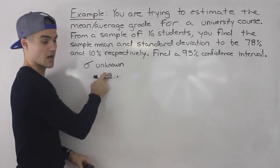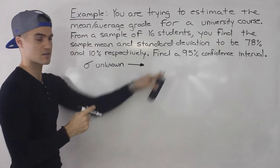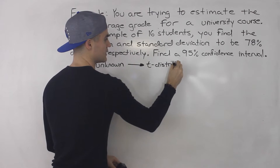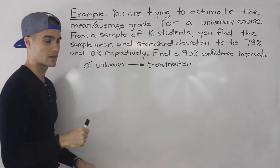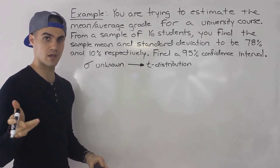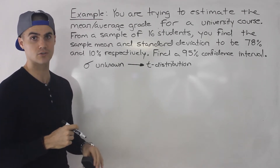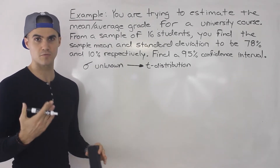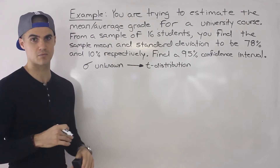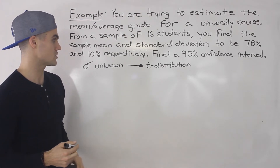Whenever the population standard deviation is unknown, what distribution are we going to use to find this confidence interval? We're going to use the t-distribution. So I'm going to show you how to do it with both the t-table, which you can print out — there's a link in the description box — and I'm going to show you how to do it with the calculator as well. The t-table we haven't really used before, but the process is pretty much the same as using a z-table. If you're comfortable with the z-table, the t-table shouldn't be too bad.